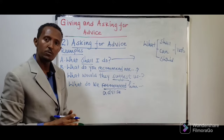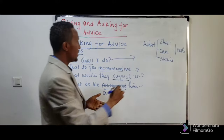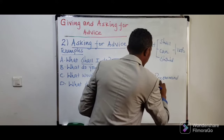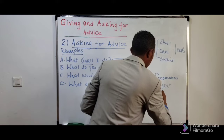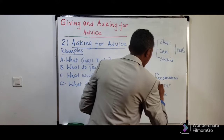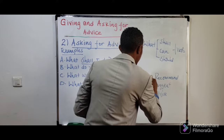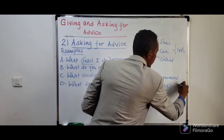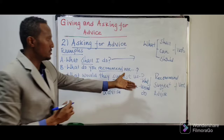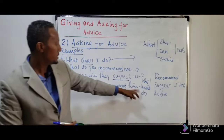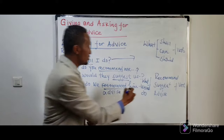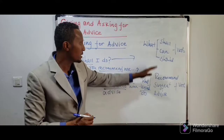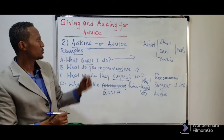Here we have 'recommend,' 'suggest,' and 'advise,' plus the WH question word, and we have 'would' or 'do,' plus the verb — and we have the infinitive with 'to.' So the structure is: WH word + would/do + recommend/suggest/advise. These are the basic structures that we use in order to ask for advice.